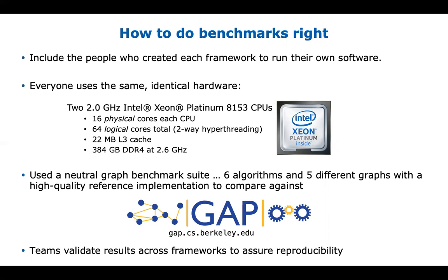We ran on the same identical hardware — a dual socket CPU board — and used a neutral graph benchmark suite. The benchmark suite was provided by Scott Beamer with the GAP Benchmark Suite, who didn't have an axe to grind with the different frameworks. This gave us an even-handed comparison with six algorithms and five different graphs, and the teams cross-validated results to ensure reproducibility.